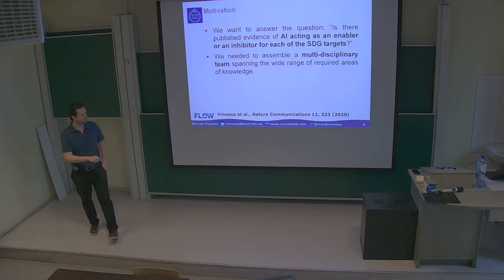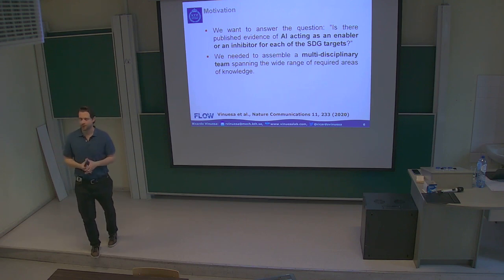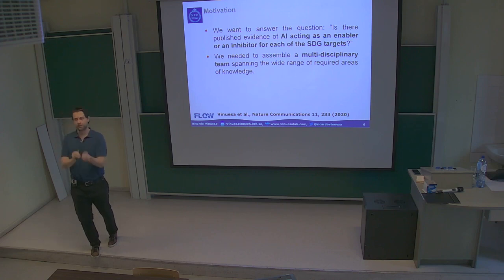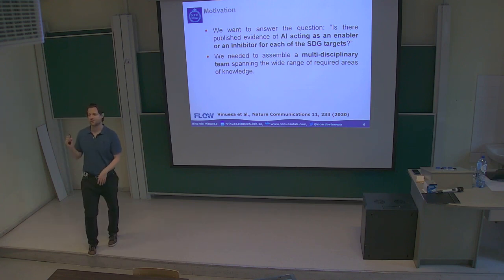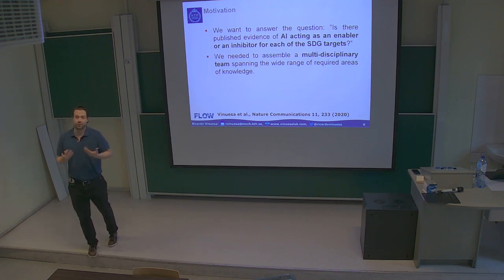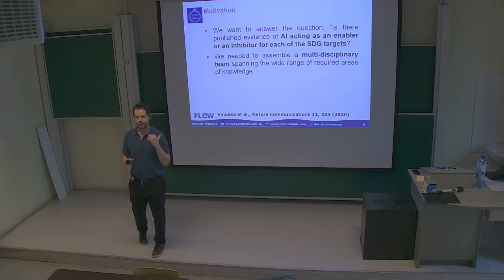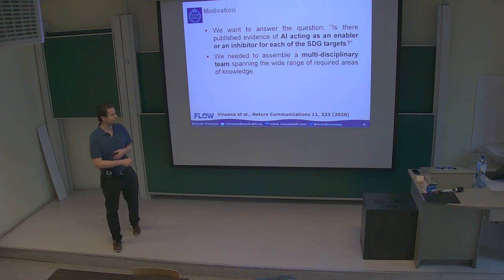Everything I'm going to be showing is in an article in Nature Communications, published two years ago. In the supplementary material, for each of the 169 targets, we give 5 to 10 references on our argumentation for positive and negative effects. AI changes very quickly and the climate situation does too, but this should be reasonably up-to-date. It's open access—go to the supplementary material and check out the list. I'm always happy to answer questions and discuss.